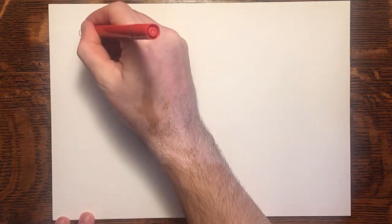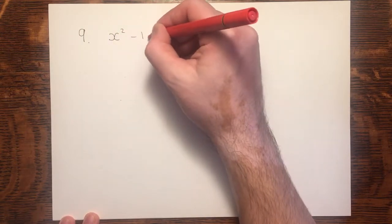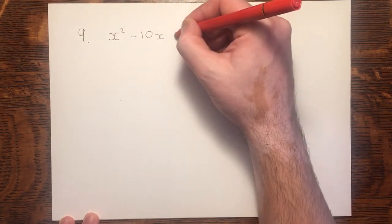Good morning. Continuing our walkthrough of review exercise 1, starting with question 9. In question 9, we're asked to factorise the following expression: x squared minus 10x plus 16.